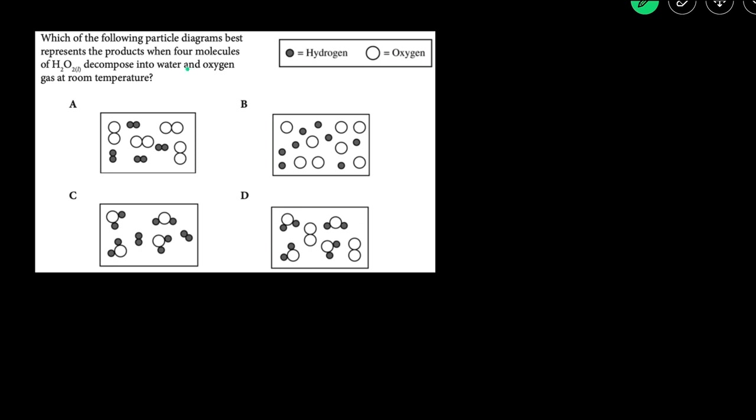This question is asking us which of the following particle diagrams best represents the products when four molecules of hydrogen peroxide H2O2 decomposes into water and oxygen gas at room temperature. We're also told that the shaded circles represent hydrogen and the white circles represent oxygen.